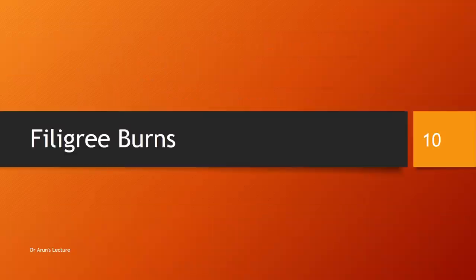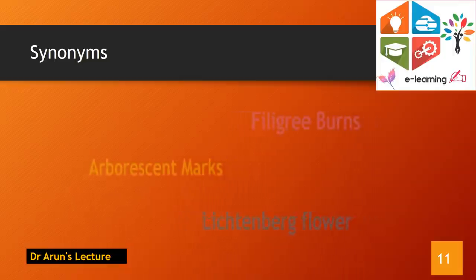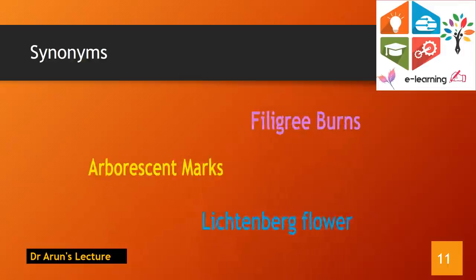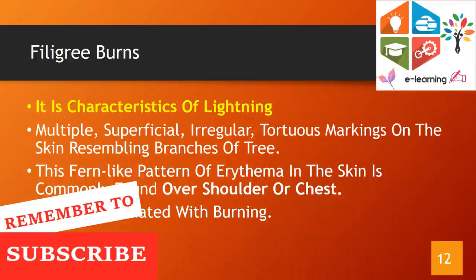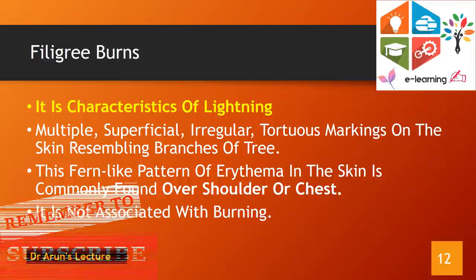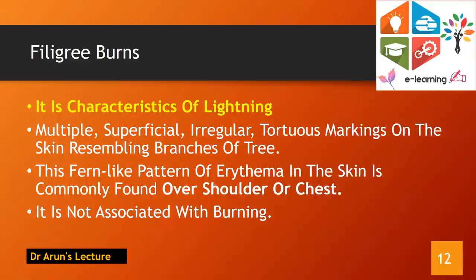Another characteristic or pathognomonic feature of lightning injury is filigree burns. The synonyms for filigree burns are arborescent marks, Lichtenberg flowers. It is a characteristic feature of lightning injury — multiple, superficial, irregular, tortuous marks seen on the exposed parts of the body. Other names include fern burns. A fern-like pattern of erythema is seen on part of the skin, most commonly noted over the shoulder and the anterior aspect of the chest region. It is not associated with actual burning.